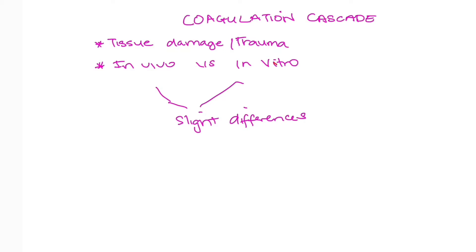The clot is necessary for stabilizing the injury. There are two processes: in vivo, which means inside your body, and in vitro, which means outside your body. There are slight differences in terms of the factors which are activated as well as the process, but we're going to get into that soon.